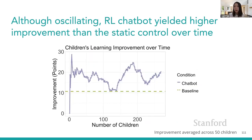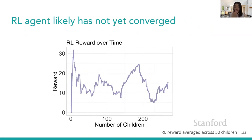Because our RL chatbot can improve over time, I plotted children's improvement over time compared to the static control. The RL chatbot yielded higher improvement for students, shown by the purple lines, versus the static control shown in the dashed green line. The reward plot shows the agent has likely not yet converged, suggesting that with more kids, the RL agent could converge to even better results for learning and engagement.